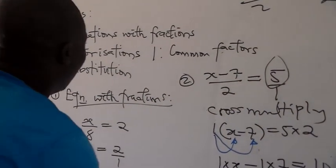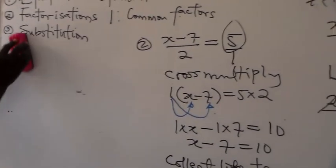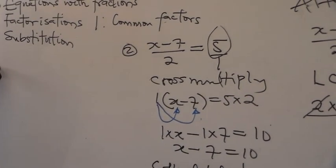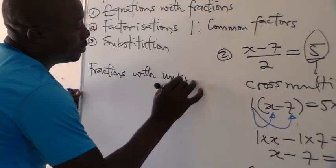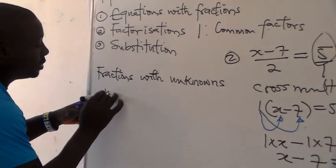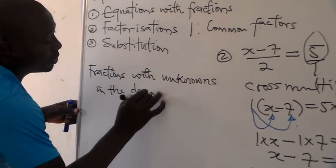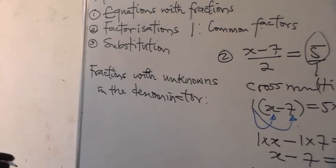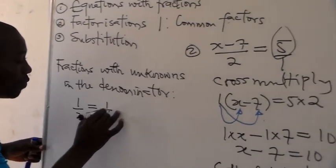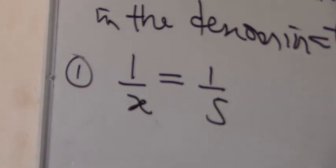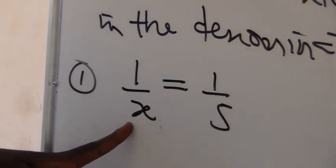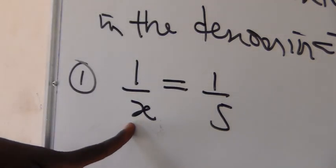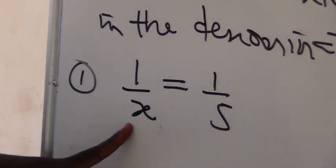Still under equations involving fractions, we can have fractions with an unknown in the denominator. For example, 1 over x equals 1 over 5. If you look at this, it is still an equation involving fractions, but at the denominator we have an unknown. In the first examples we looked at, the denominator did not contain an unknown — and x is called an unknown because it is to be solved for.